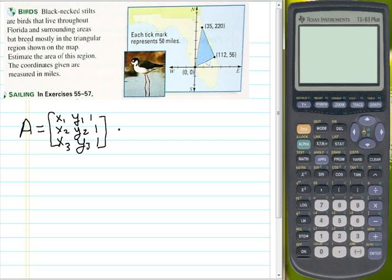So for our matrix, matrix A would be 0, 0, 1, 112, 56, and 1, and finally 35, 220, and 1.